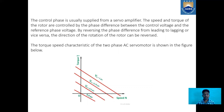Now let us see the graph between torque and speed of a servomotor. The control phase is usually supplied from a servo amplifier. The speed and torque of the rotor are controlled by the phase difference between the control voltage and the reference phase voltage. By reversing the phase difference from leading to lagging or vice versa, the direction of rotation of the rotor can be reversed.